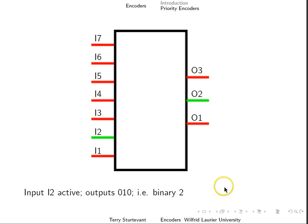So here's an example from before, with input 2 active, and so the output encodes the binary number 2. Now notice that in this case, even if input 1 is active, then the output still encodes a binary 2, because 2 is higher than 1.